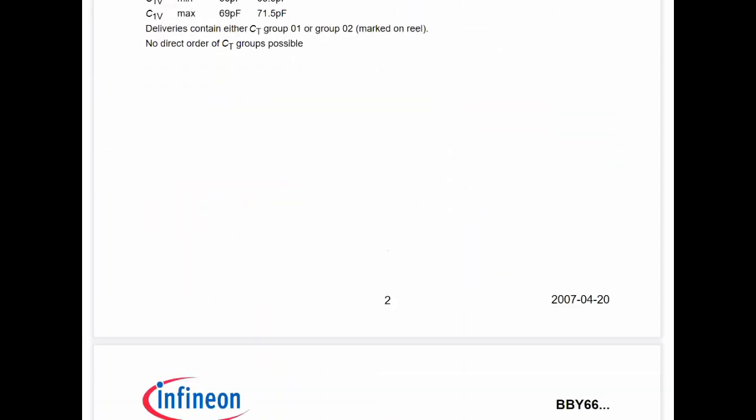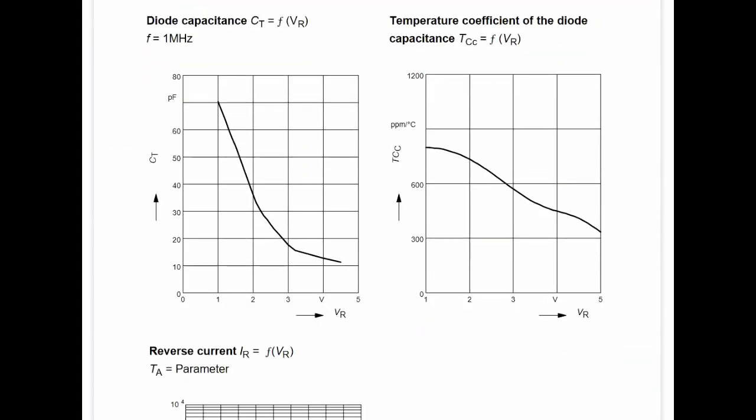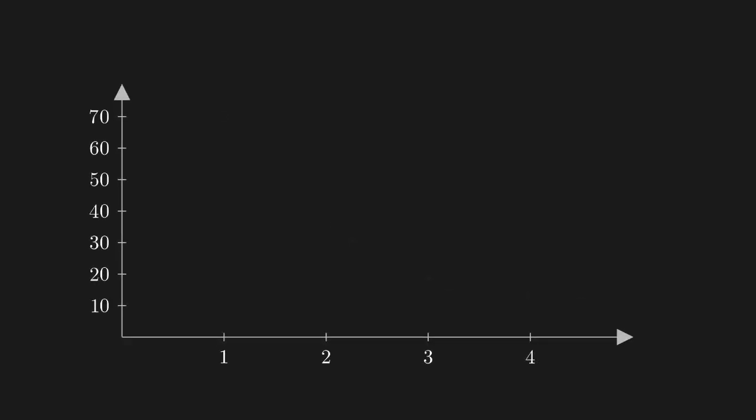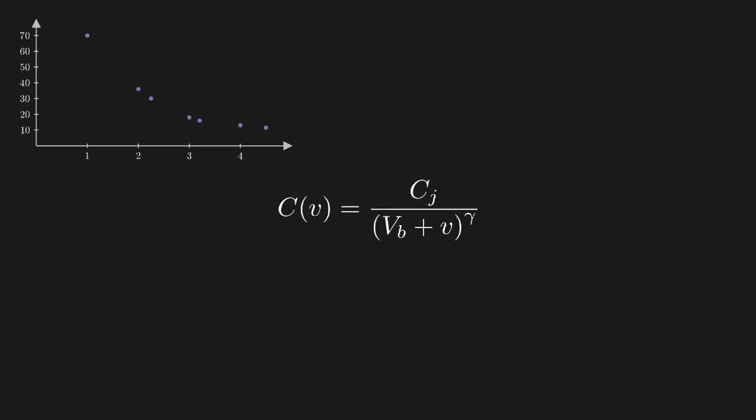The datasheet gives a plot of capacitance versus voltage, which we'll use as our data set to be fit. The diode's capacitance will have the following form as a function of voltage.